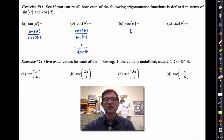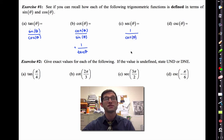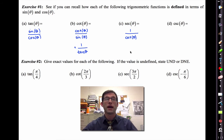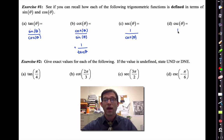The secant function — this is one I actually have the most problems with, because I often have to think about whether it's one divided by sine or one divided by cosine. It's a little bit counterintuitive, but secant is one divided by cosine. And cosecant is one divided by sine.